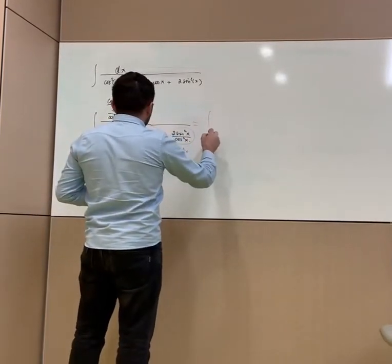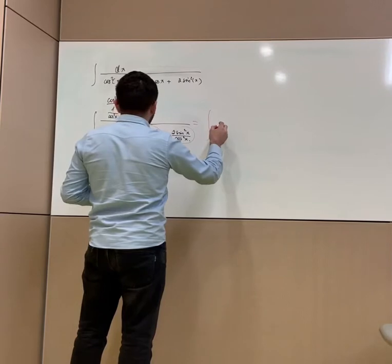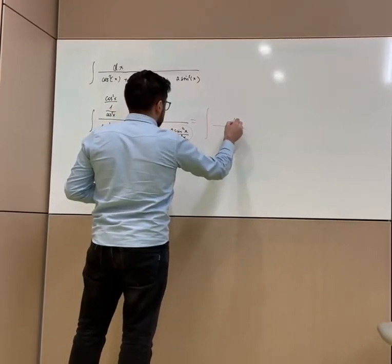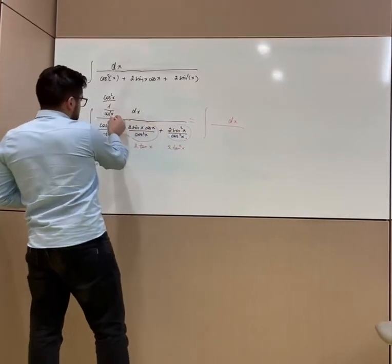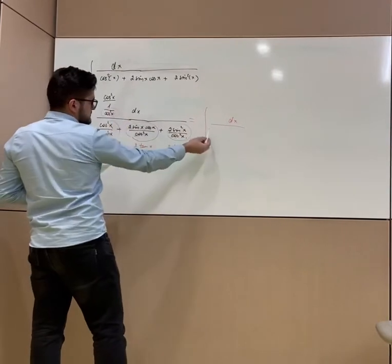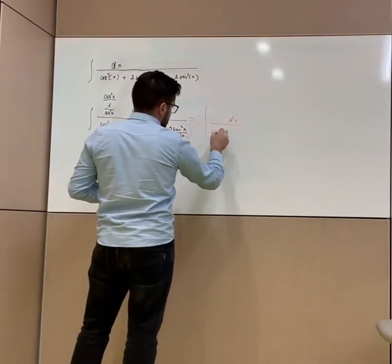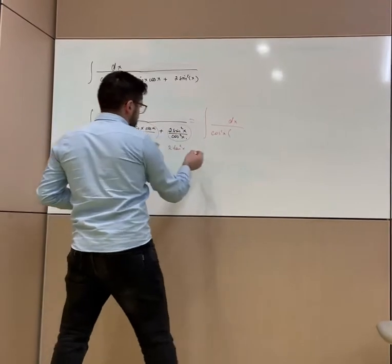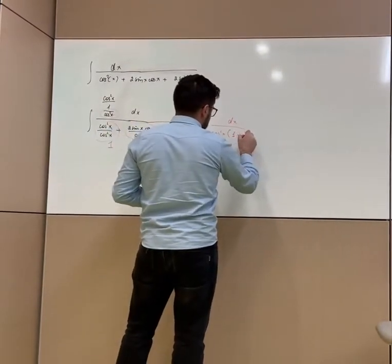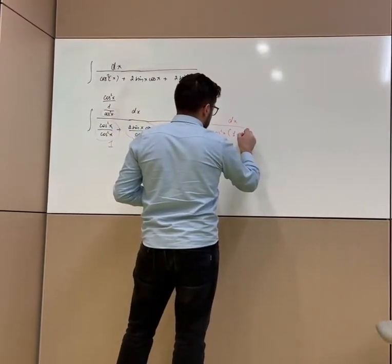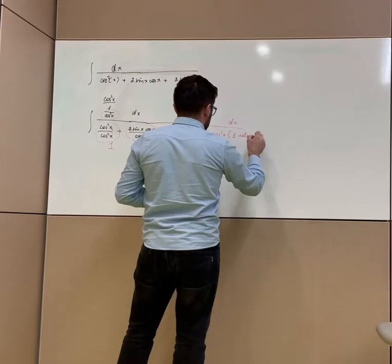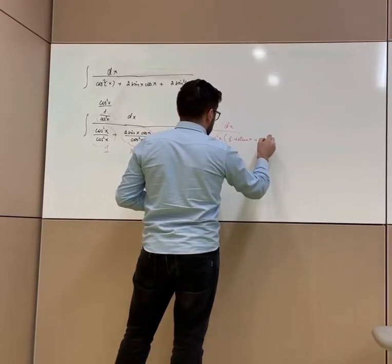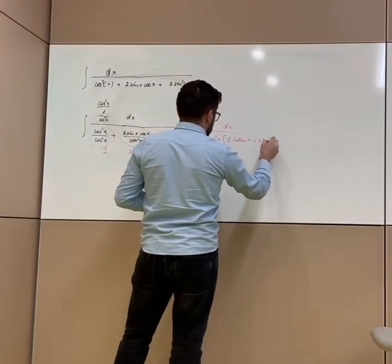Now my new integral looks like this: dx over cosine squared x, with the denominator being 1 plus 2 tangent x plus 2 tangent squared x.